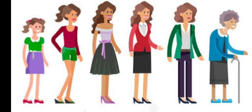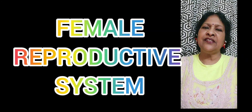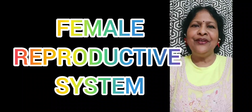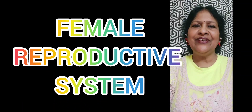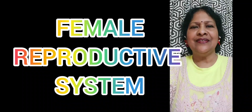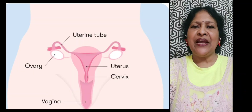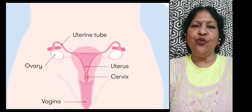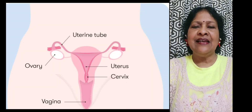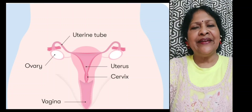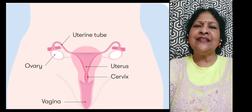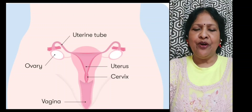So in this video, let's get started with the female reproductive system. Female reproductive organs can be divided into two parts. The first being the primary organ, which is associated with the production of the ova or the egg cell, and the rest fall under the secondary or accessory organs. So let's get started with the primary organ.